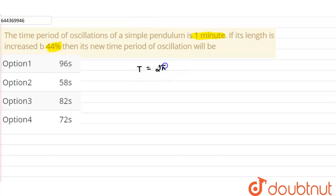Now, the time period of oscillation of a simple pendulum is given as T equals 2π times the square root of L upon g, which is given to us as one minute or 60 seconds. So let us suppose this is our equation number one.